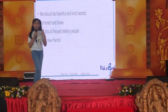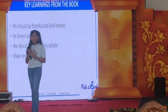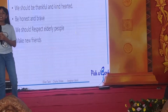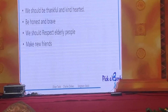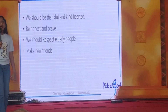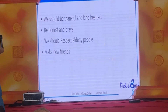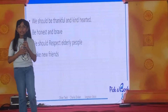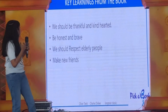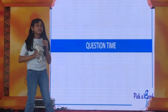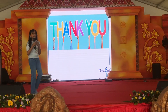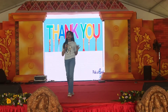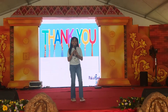So I'll be ending here. You should read the book to find out what happens to Oliver — it's very mysterious. The key lessons from the book are: we should always be kind-hearted and thankful, respect elderly people, be honest and brave, and always make new friends. So next is question time. Thank you everybody for listening to my presentation. I hope it was interesting and nice. Thank you. Bye.